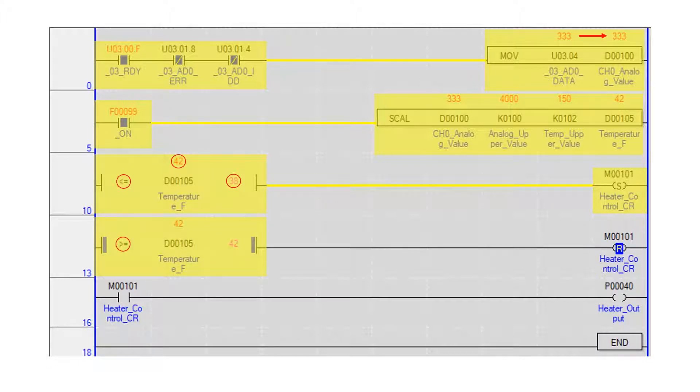Using a greater than or equal to compare instruction, the current temperature is compared to a set point of 42. If the temperature is at or above 42 degrees, the internal bit heater control CR is reset. The heater control CR bit turns the discrete output heater output on or off.